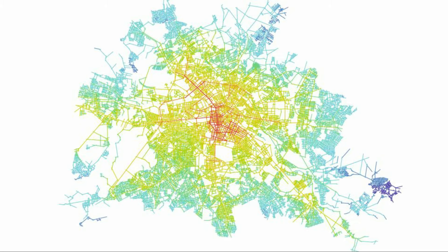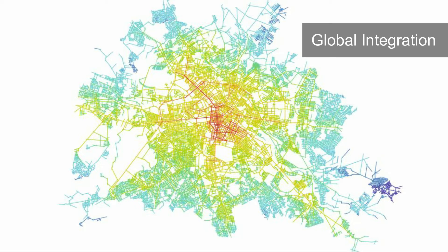Integration. The term global integration refers to how a roadway interacts with all other streets in a given spatial system. This might be a district, a quarter, a hamlet, town, city, or even a region. The degree of accessibility a street has with other streets in an urban system is estimated using a global integration analysis, which takes into account the total number of directional changes of the urban entity.